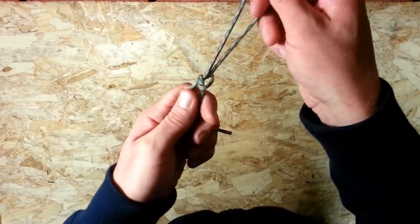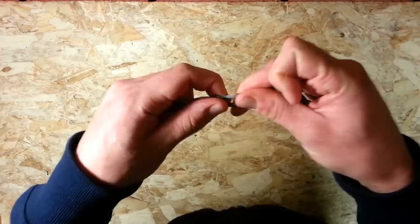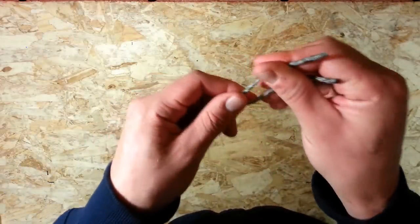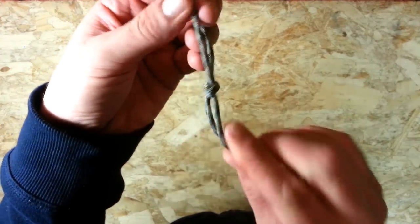As you pull them together, you should see them twining up, forming a knot that looks, tighten that up a little more, a knot that looks like that, and that's your snake knot.